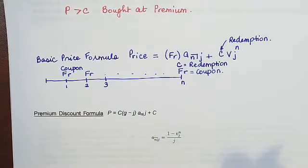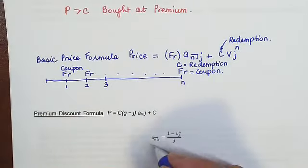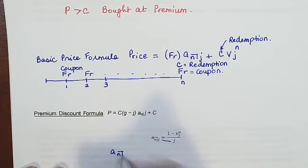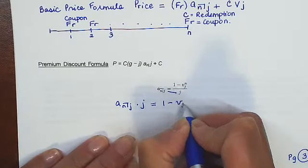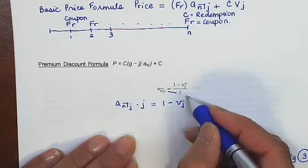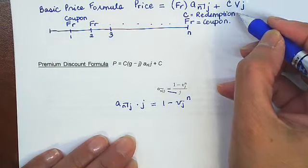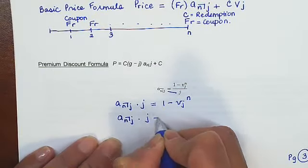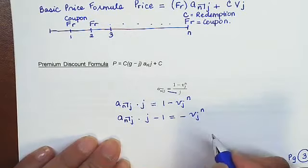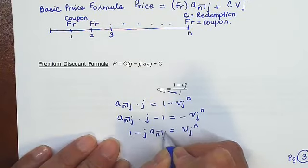And today from that I would like to derive the premium discount formula once again for you. So we will start with this term A angle NJ right here. And my objective is to cross multiply like this. So A angle NJ times J equals 1 minus VJ to the N. The objective is to replace this VJ to the N right here by something in terms of A angle NJ. So that's easy enough to do. Let's bring the one to the other side. You have A angle NJ times J minus 1 equals minus VJ to the N. And I'm interested in positive VJ to the N. So that's equal to 1 minus J A angle NJ.